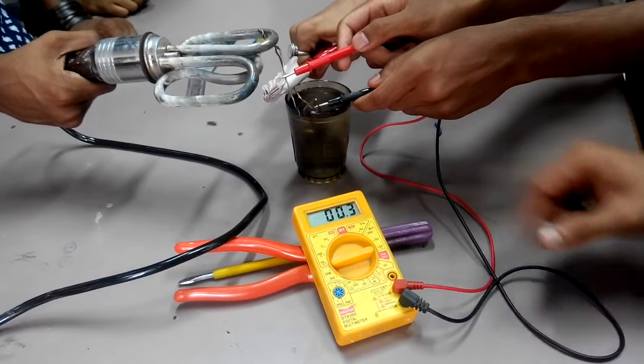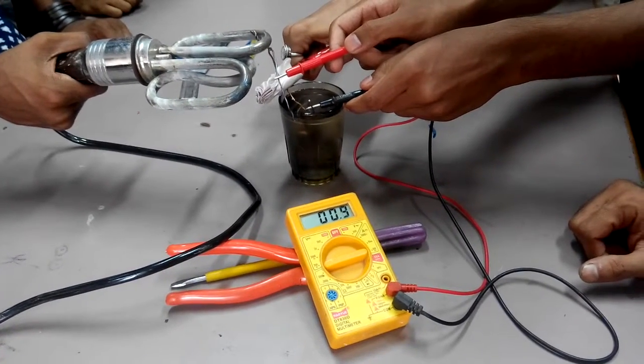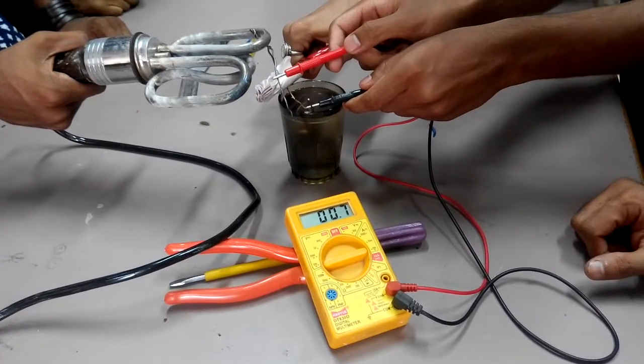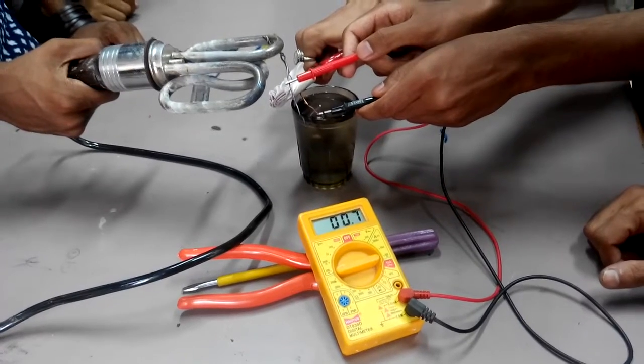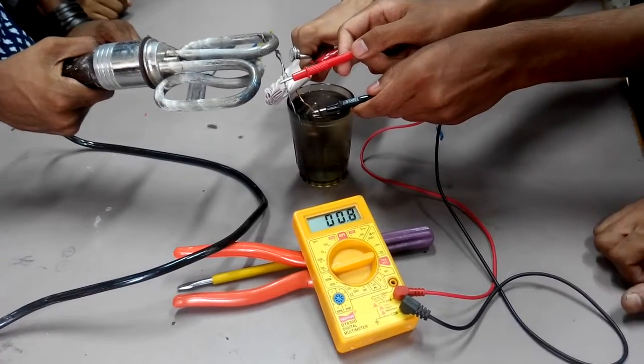You can see this voltage is rising because the electron flow creates a potential difference inside. So this is the verification of the Seebeck effect.